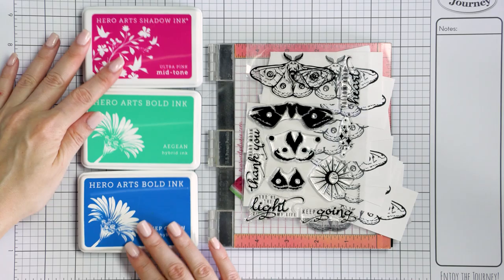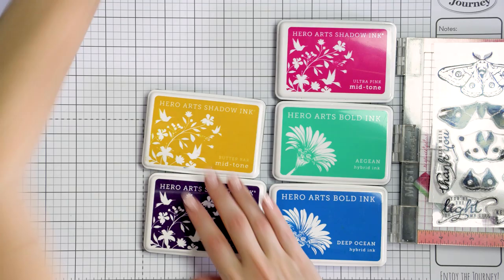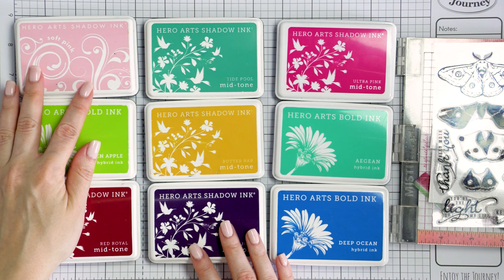I picked Deep Ocean, Aegean and Ultra Pink. Next I went with Grape Juice, Butter Bar and Tide Pool, and for the third group I selected Red Royal, Green Apple and Soft Pink.